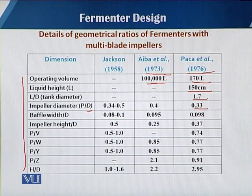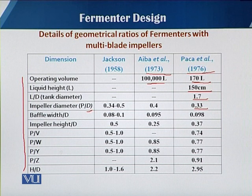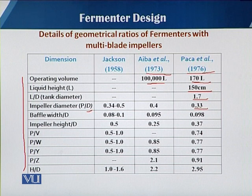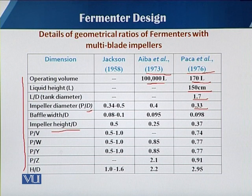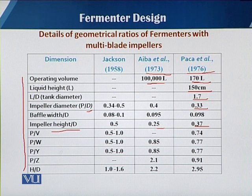Regarding the baffle width relative to the fermenter diameter, the ratio mostly ranges from 0.08 to 0.1, with values of 0.095 and 0.098. Although there is a little difference among the three models, the ratio of impeller height over D is 0.5, 0.25, and 0.37 respectively for Jackson, Iba et al, and Pekka et al.